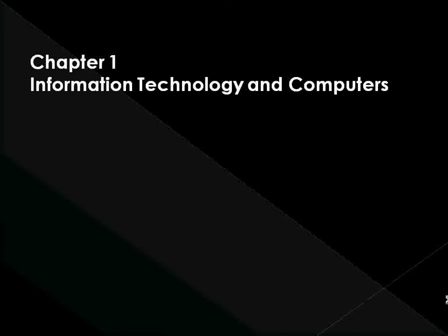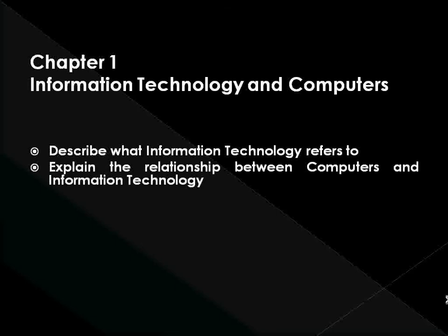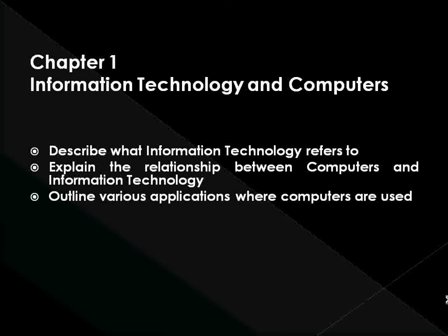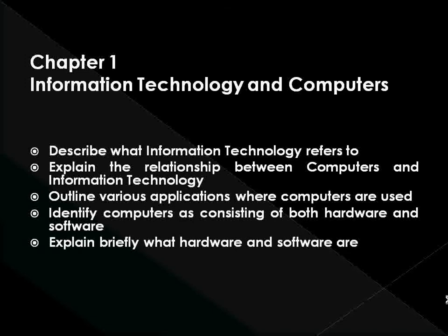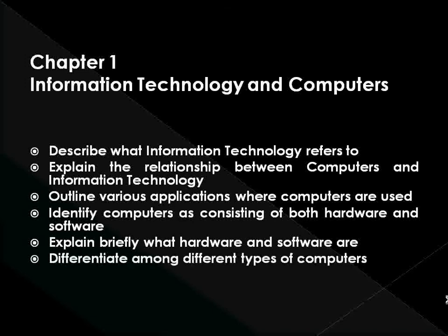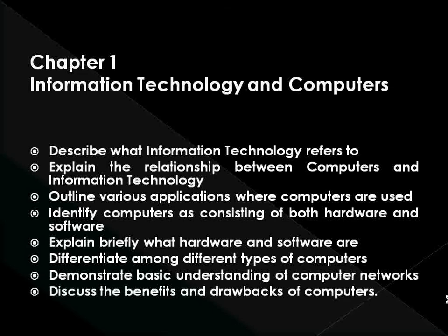Upon completion of this unit, you should be able to do the following: Describe what information technology refers to. Explain the relationship between computers and information technology. Outline various applications where computers are used. Identify computers as consisting of both hardware and software. Explain briefly what hardware and software are. Differentiate among different types of computers. Demonstrate basic understanding of computer networks. Discuss the benefits and drawbacks of computers. We hope you enjoy the learning experience.